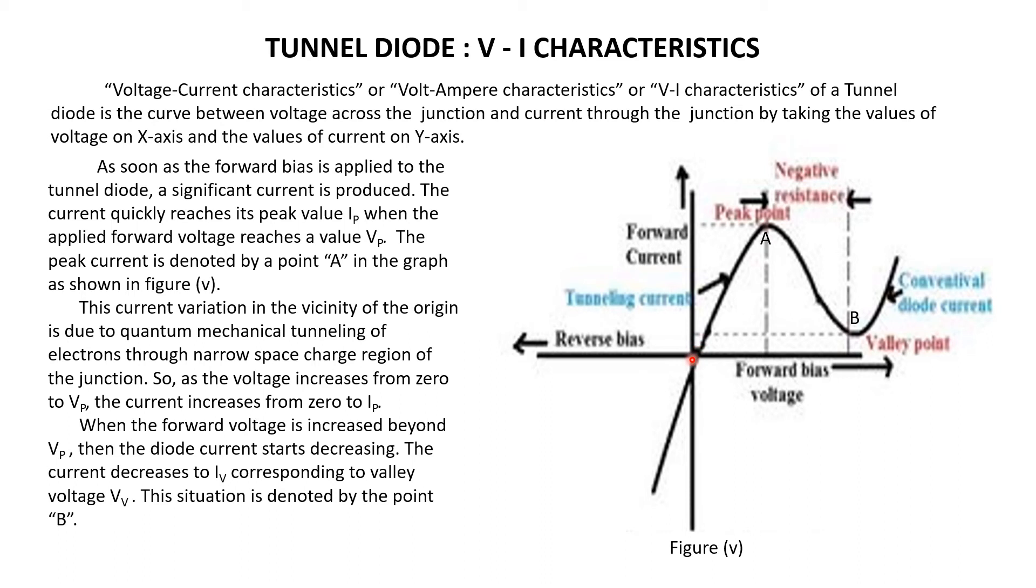As soon as forward voltage is applied to the tunnel diode, a significant current is produced. The current quickly reaches a peak value Ip when the applied forward voltage reaches the value Vp. This point is the peak current and is represented by point A in the graph.